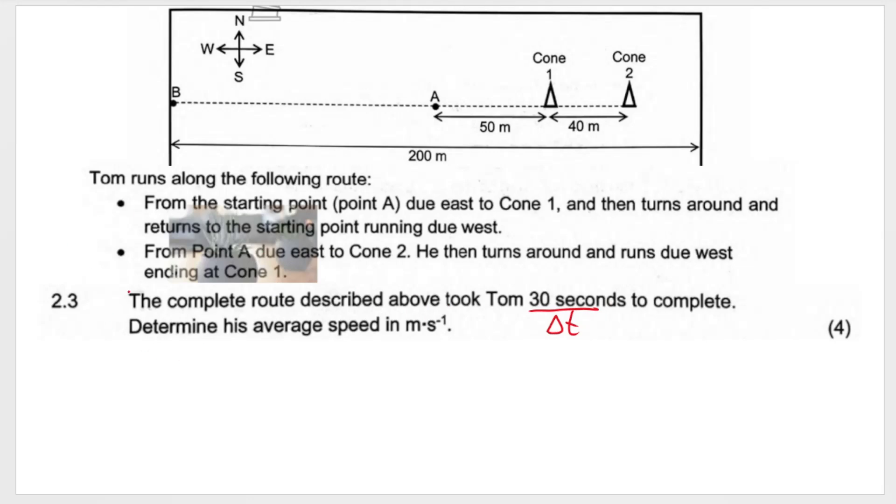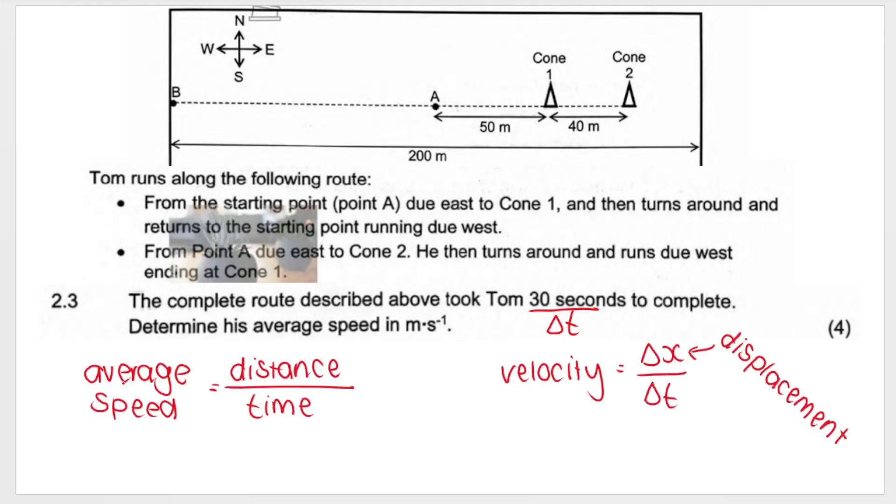They say that the complete route described above took Tom 30 seconds to complete. That's our time. Determine his average speed in meters per second. In videos in my playlist for mechanics, I discuss the difference between speed and velocity. Remember, speed is distance divided by time. We all did speed, distance, time in grade nine. This is the formula for speed: distance over time.